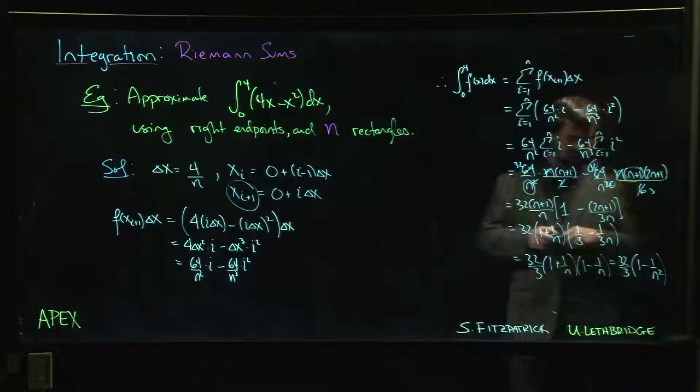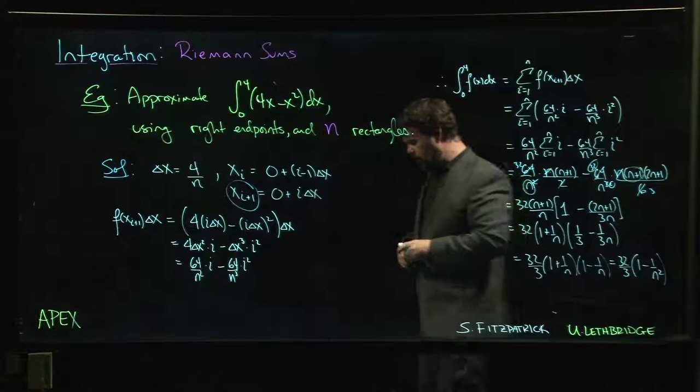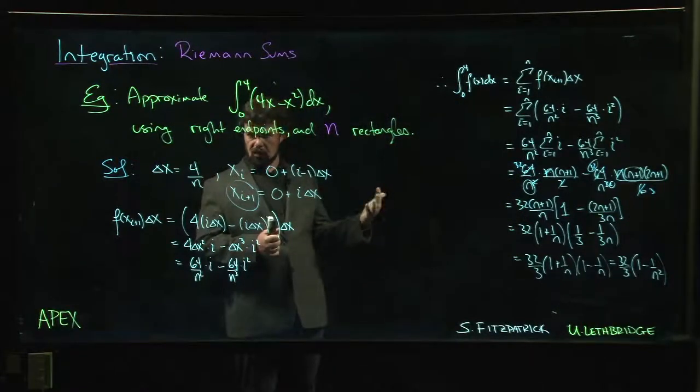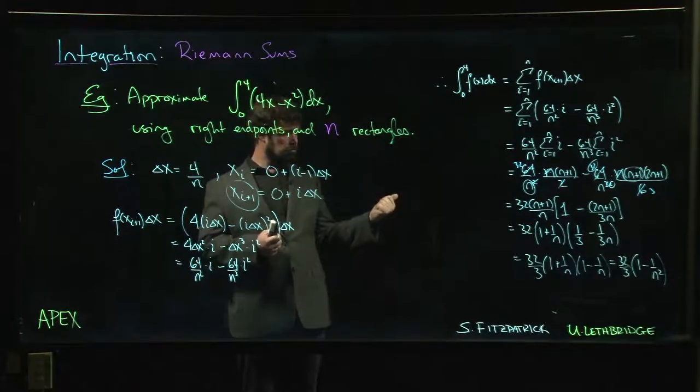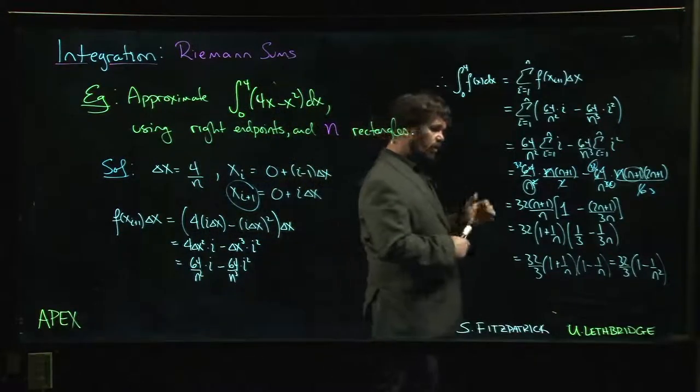So take n big enough, you're going to get a pretty accurate answer. That n equal to 1,000 that we did before, you're accurate to within 1 over roughly 1,000 squared. So you're accurate to within 1 in a million. That's pretty good.